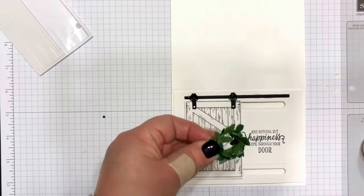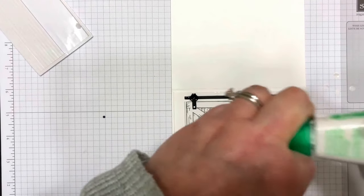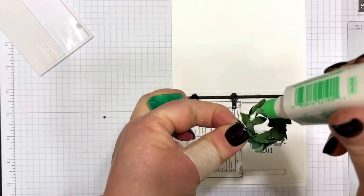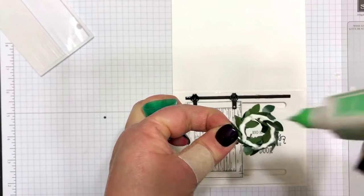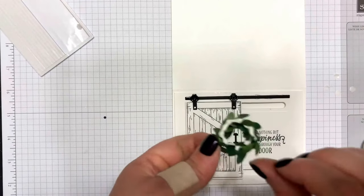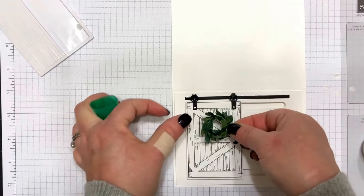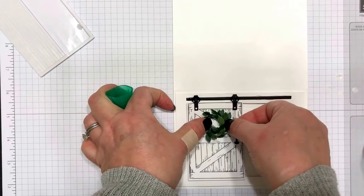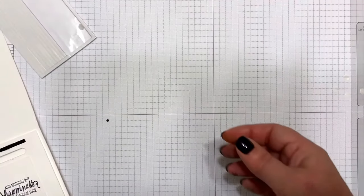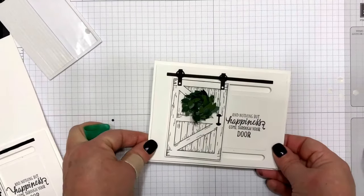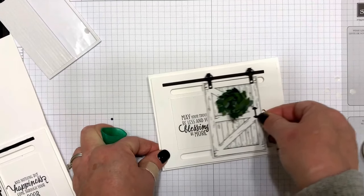And then I added one of our boxwood wreath embellishments. You just want with this, the fine tip glue isn't quite strong enough for that, so I'm using the Tombow. And you just want to put a generous amount on and then place that in place and just give it a little time to dry. And so once again, here is the finished card, and that does move side to side very easily.